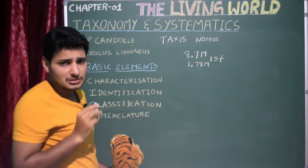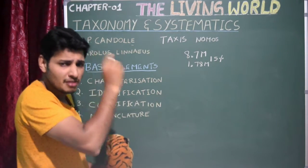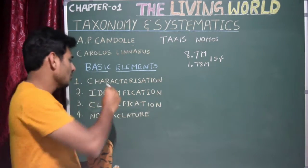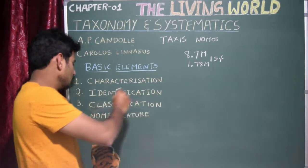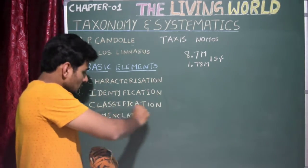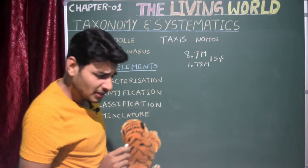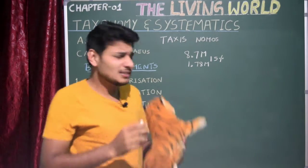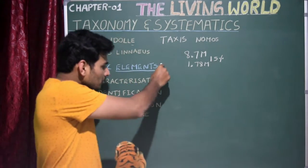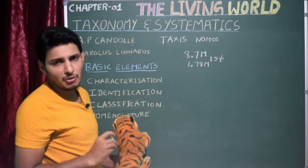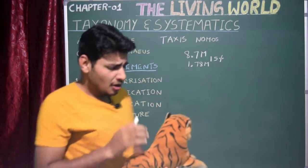Now let us learn the four basic elements of taxonomy, also called the processes of taxonomy. The first one is characterization, the next is identification, the third is classification, and the fourth is nomenclature. Please remember this order as it is very important for competitive examinations.